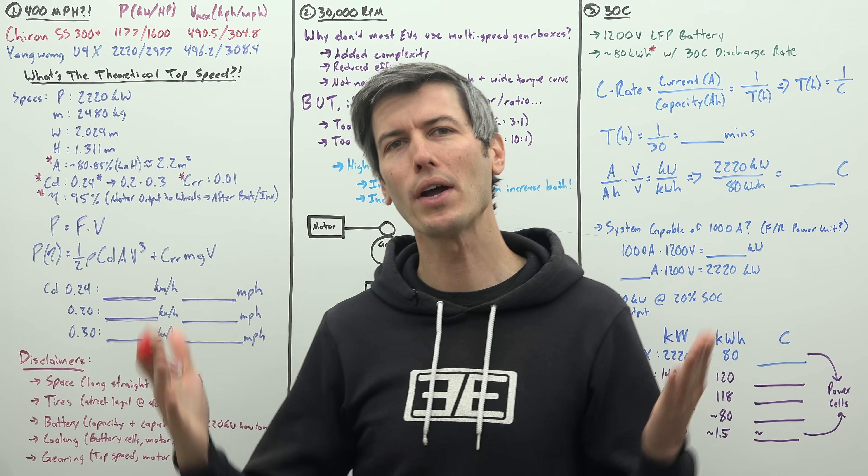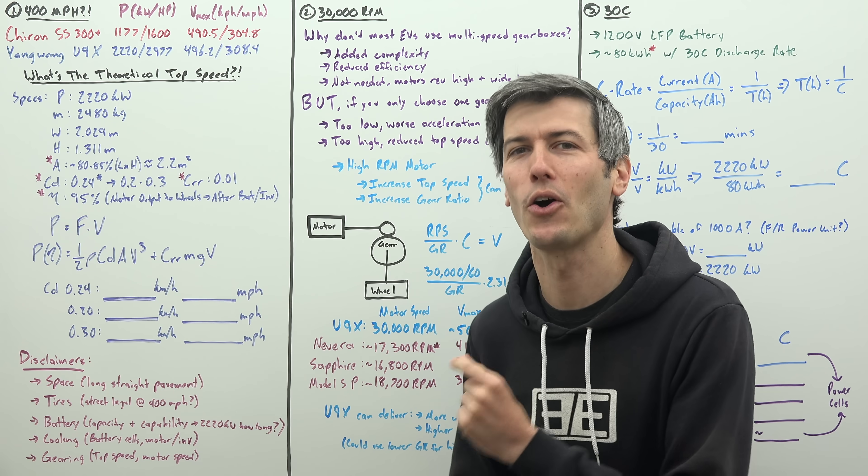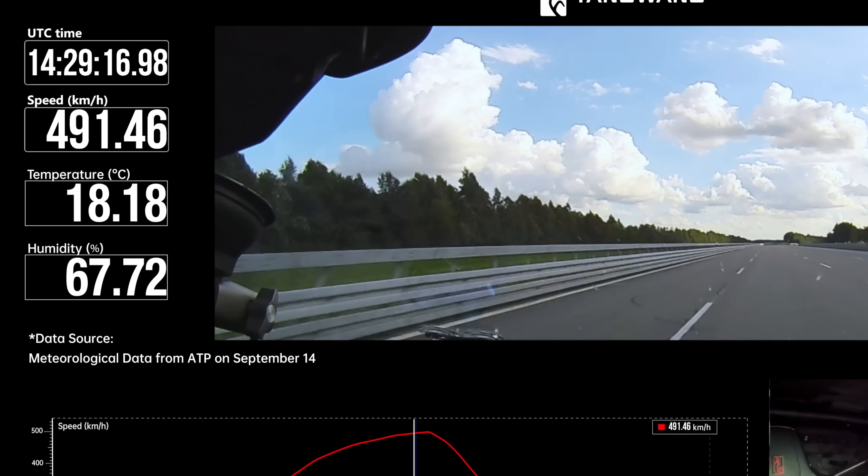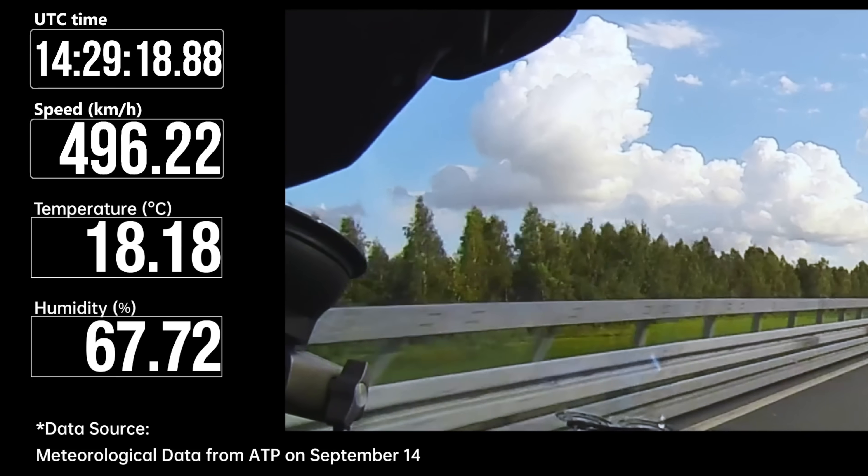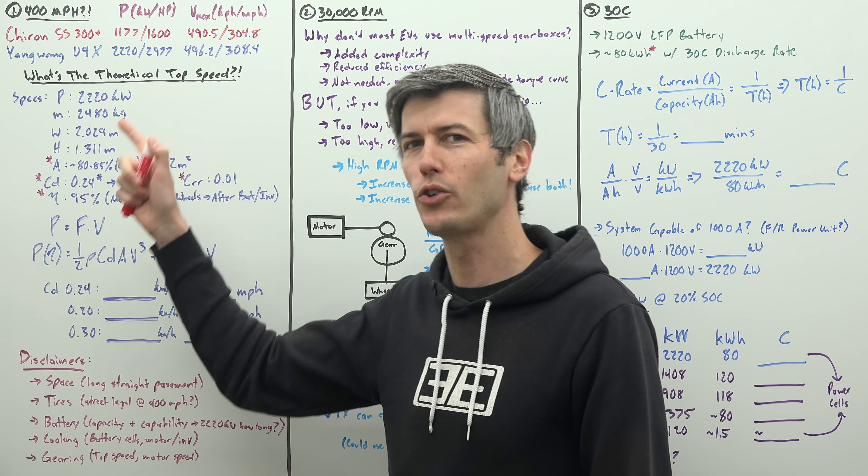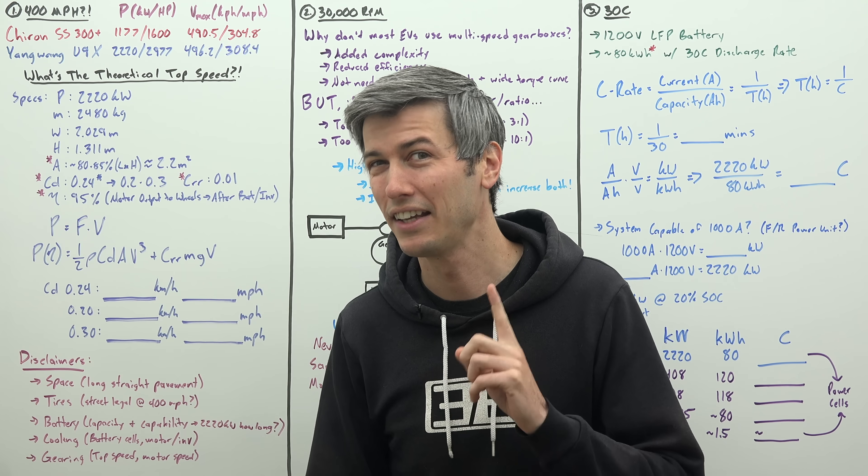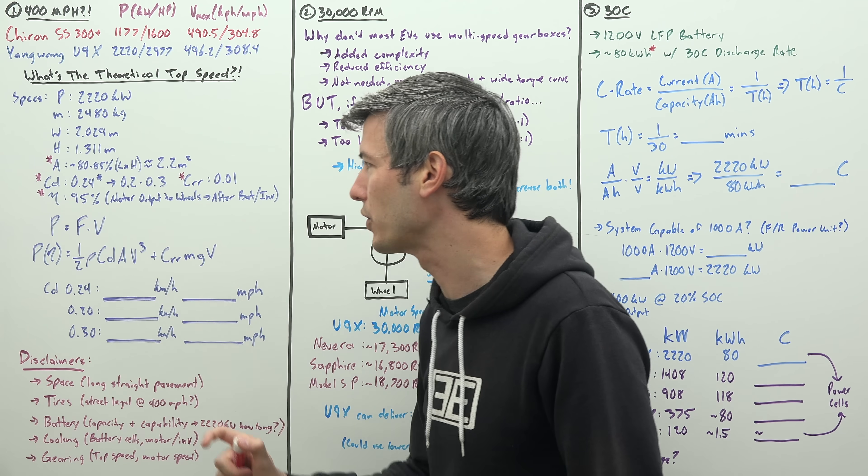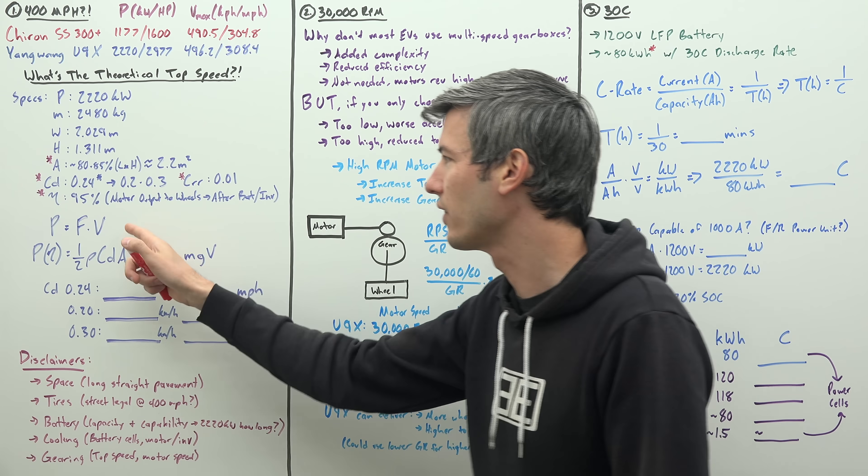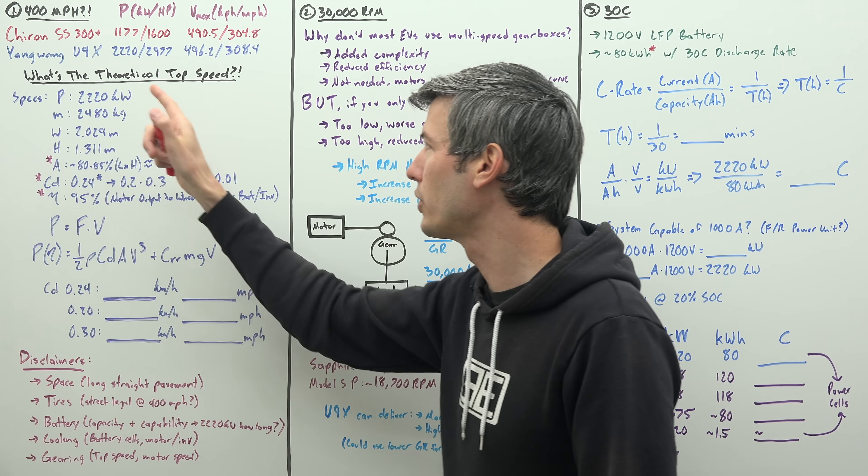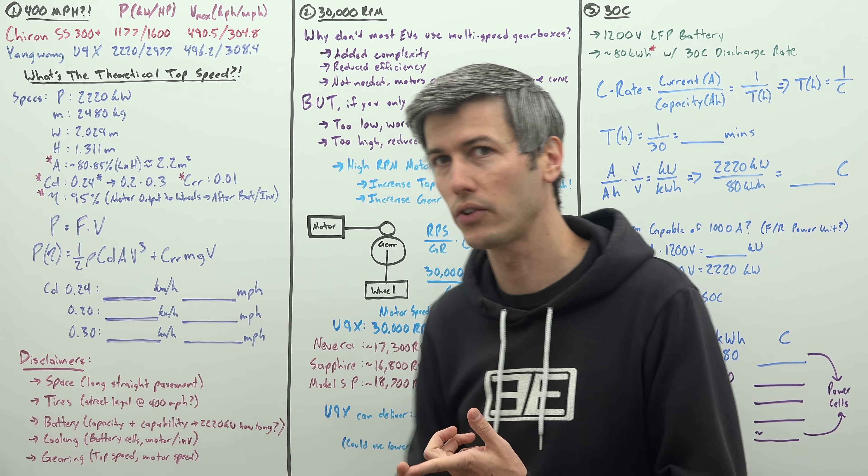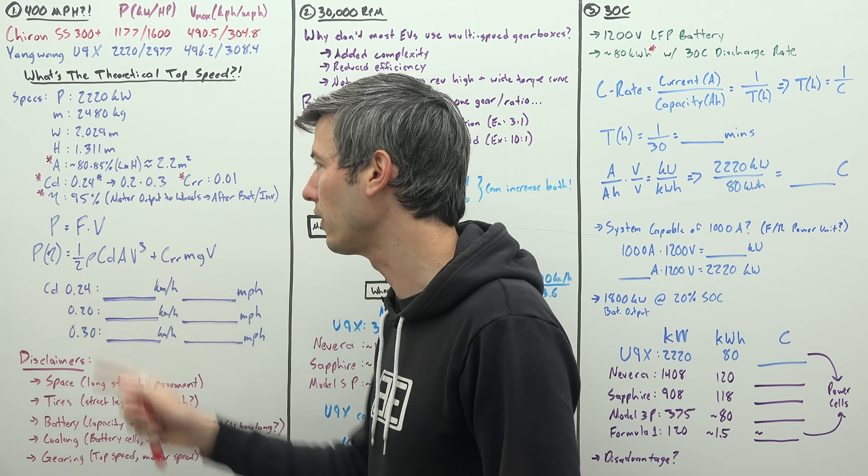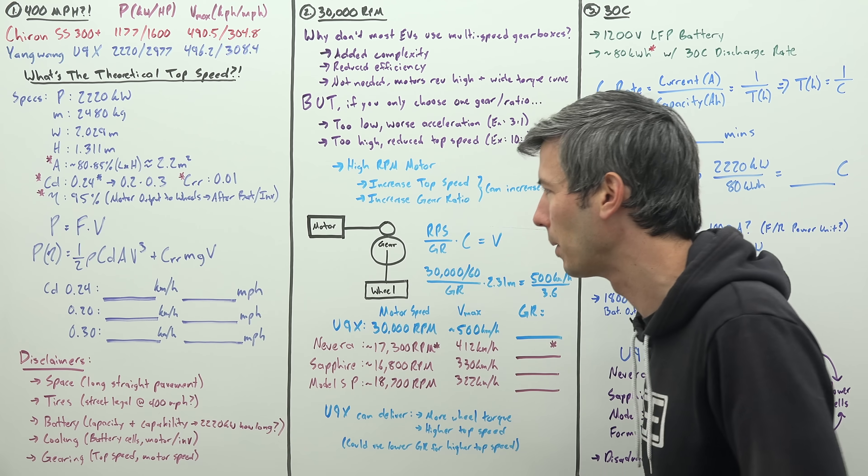So starting off, what is the vehicle's theoretical top speed based on how much power it has? Because I think it's obvious from watching the video that it could easily hit 500 kilometers per hour. But if it actually has 2220 kilowatts, then its theoretical top speed is much higher. So what is that speed? Well, we can calculate velocity with this equation here. Power equals force times velocity. We know power, 2220 kilowatts. We can calculate the resistive forces being aerodynamic drag and rolling resistance. And that just leaves us with V, so we can solve for our maximum velocity.